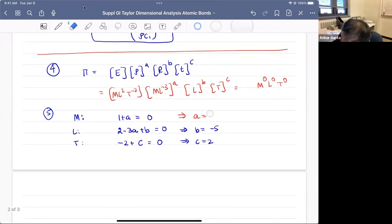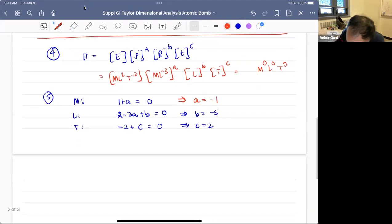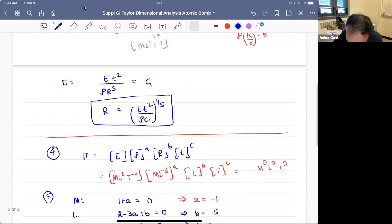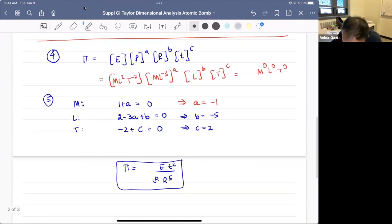I just wrote a typo here, -1. And so π essentially becomes E by ρr⁵t². And this is the same as the one we found using here, Et²/ρr⁵. So it is the same. So you can use either methods and both of them give you the same answer.